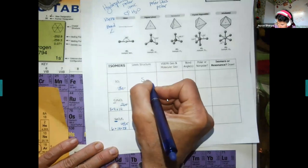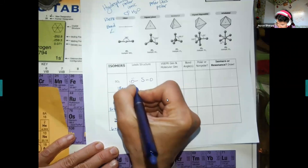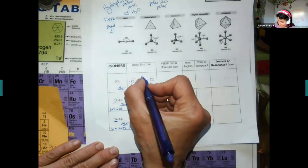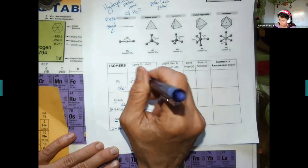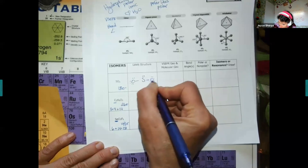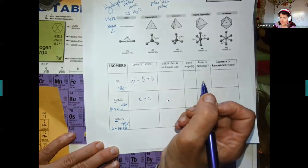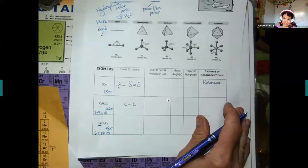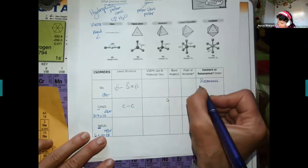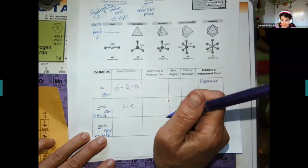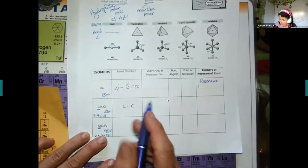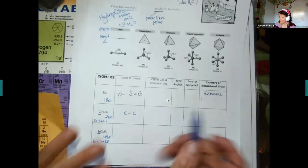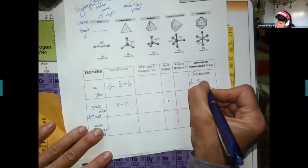18 electrons total. Sulfur has an oxygen on each side. Give your octets to the oxygens and you've used 16, leaving only two on the center. Your center has 2, 4, 6 — so you erase two and move them over. This is a resonance: you have a double and a single bond, but they have to be to the same element. We would show the double bond on the other side.